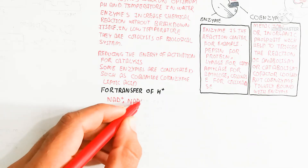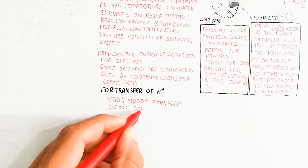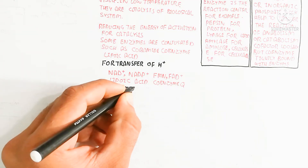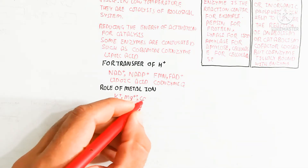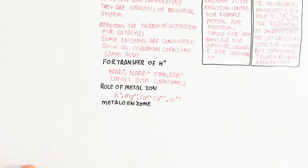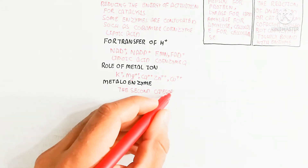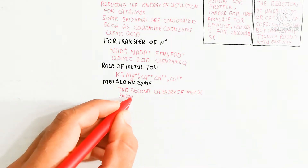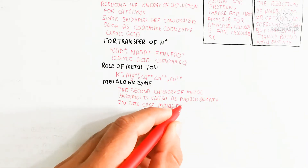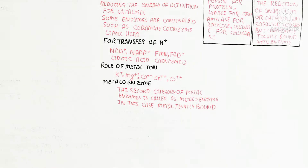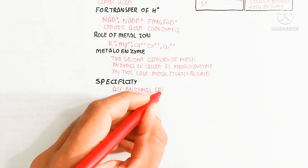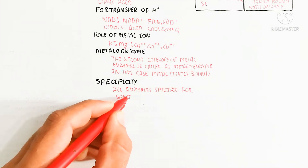For transfer of hydrogen — proton donation or acceptance — the relevant coenzymes are NAD+, NADP+, FMN, FAD, lipoic acid, and coenzyme A. The role of metal ions includes potassium, magnesium, calcium, zinc, and copper. These are known as metalloenzymes. In metalloenzymes, the metal is tightly bound to the enzyme.